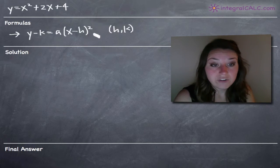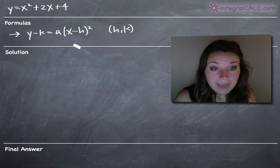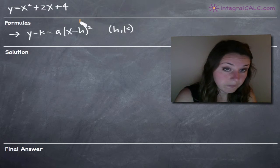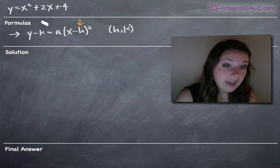The reason that we want to transform it into this form is because when we've got it in this form, we can pull out two pieces of information: h and k.